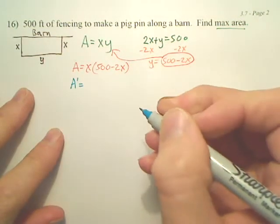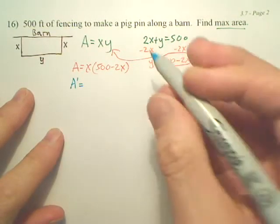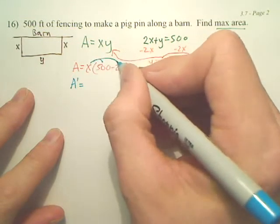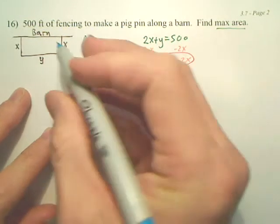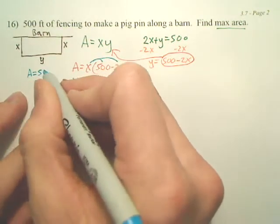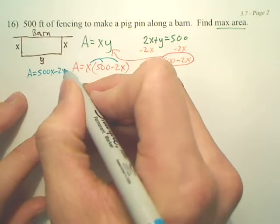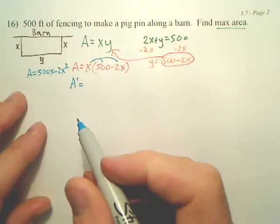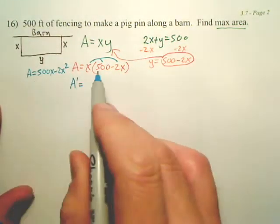So, A prime is going to be, before we do that, let's distribute this. What do you get? Doesn't it become 500x minus 2x squared? We okay with that?